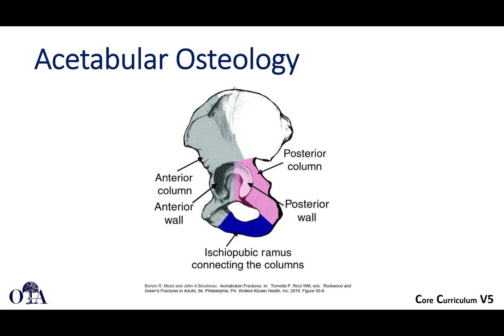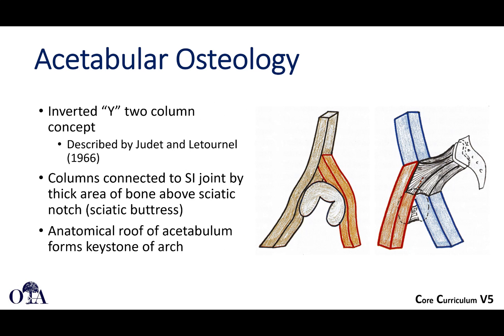The cup of the acetabulum does have an anterior wall and posterior wall, which are part of those columns. You have this inverted Y concept that was originally described by Judet and Letournel, and some of these are the original drawings from their original textbooks. The columns are connected to the SI joint by a thick area of bone above the sciatic notch that we call the sciatic buttress. If you can look at a bone model, you'll see what we're talking about.